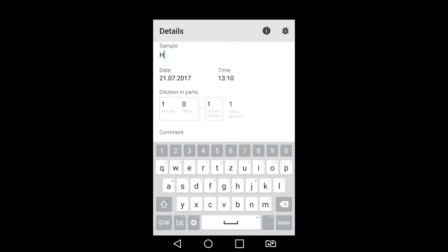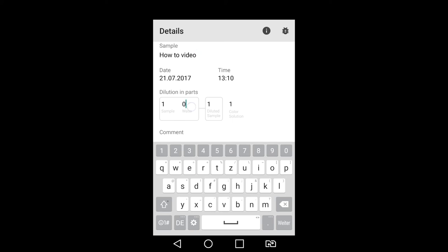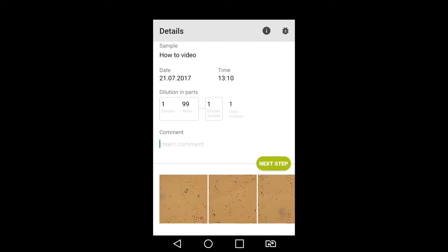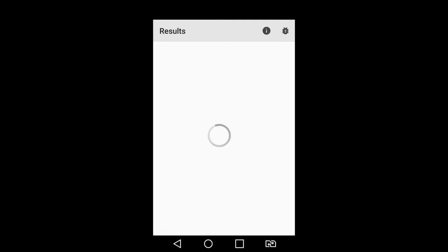In the sample field, enter the name of your sample. Date and time are automatically entered. Enter 1 part sample and 99 parts water for the dilution and 1 to 1 for the sample's mix ratio of coloring agent. Include whatever you would like in the comment section. We recommend where the sample was taken from, the type of yeast and the generation of the yeast. Click next to view your results.